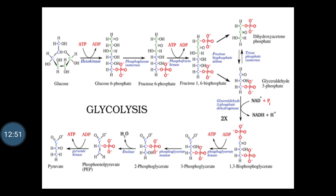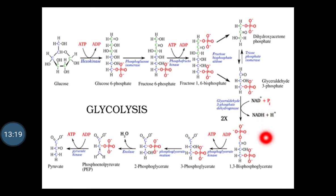Step 5 is the isomerization of dihydroxyacetone phosphate. As glyceraldehyde 3-phosphate can be readily degraded in the subsequent steps of glycolysis but dihydroxyacetone phosphate cannot, it is isomerized into glyceraldehyde 3-phosphate instead. The dihydroxyacetone phosphate is isomerized into glyceraldehyde 3-phosphate in the presence of the enzyme triose phosphate isomerase. This reaction completes the first phase of glycolysis.